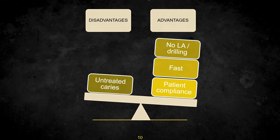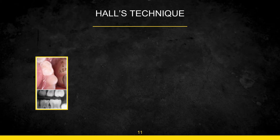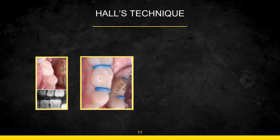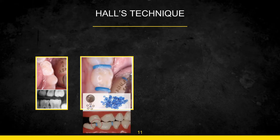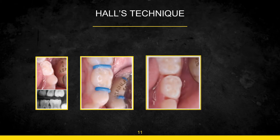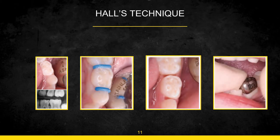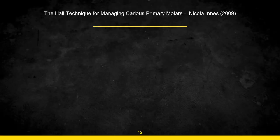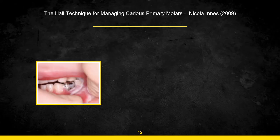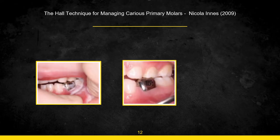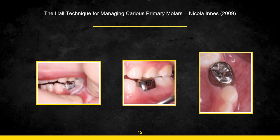The steps of Hall's technique: first, crown selection based on radiographic analysis and clinical judgment. Then proximal separation using wooden wedges, plastic wedges, or orthodontic separators — tiny elastic bands placed in proximal areas whose tension separates the teeth. Once separation is achieved, the crown is filled with luting cement, seated onto the tooth, and the patient is asked to bite down firmly for two to three minutes. Excess cement is cleaned with a scaler and cotton.